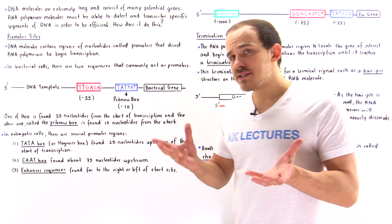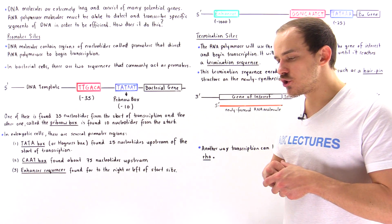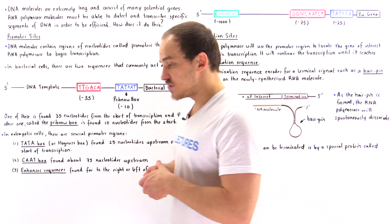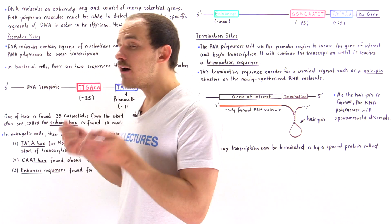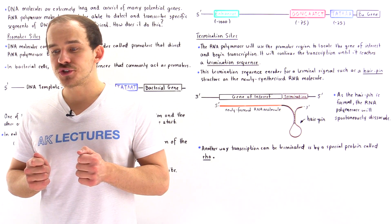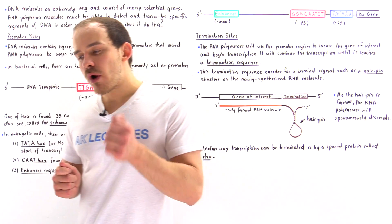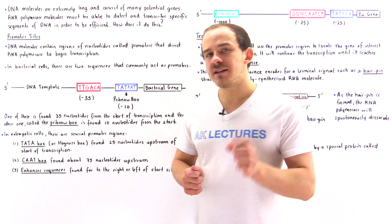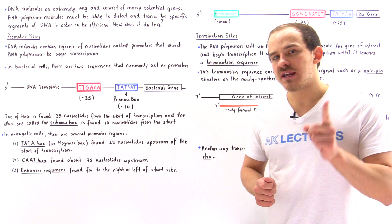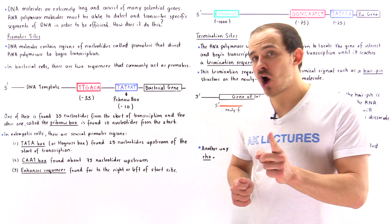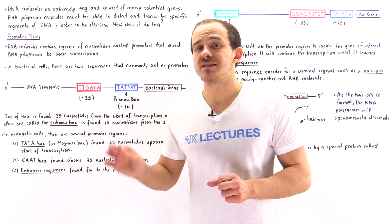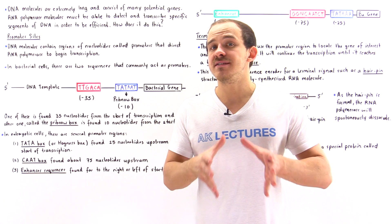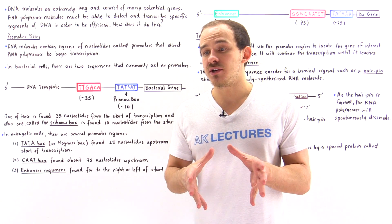DNA molecules are very long and consist of many many nucleotides. The question is: how exactly does the RNA polymerase know where to begin the process of transcription on that DNA molecule?